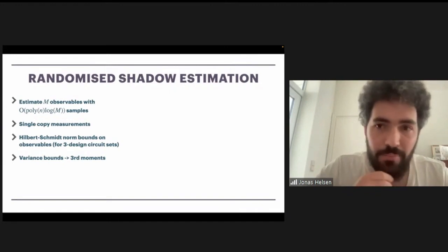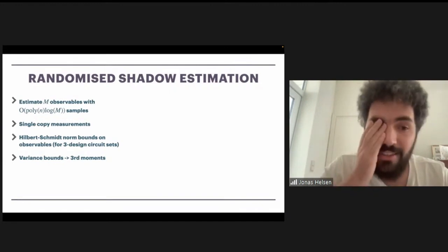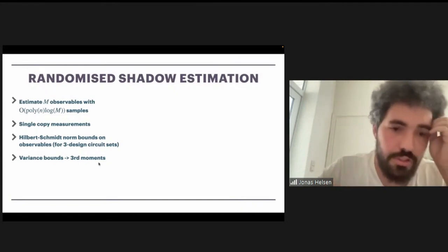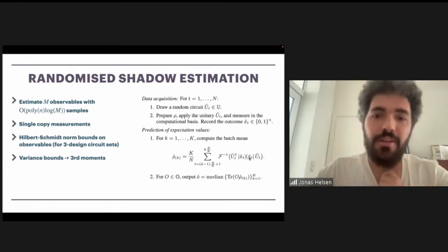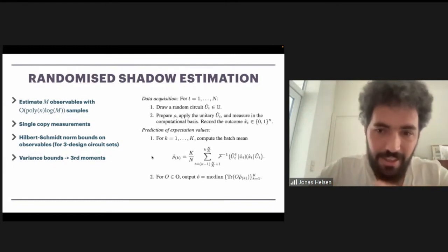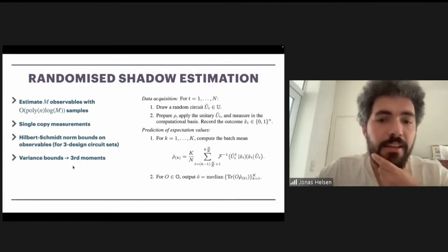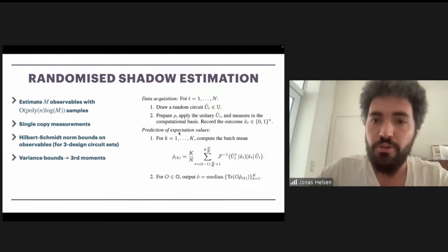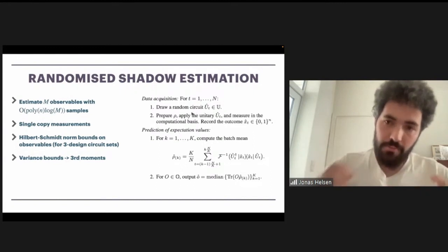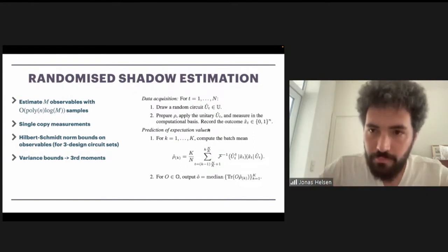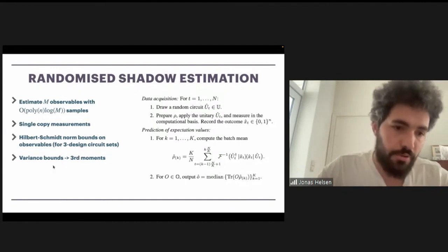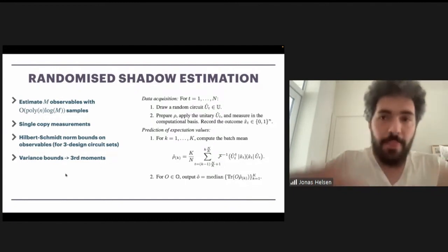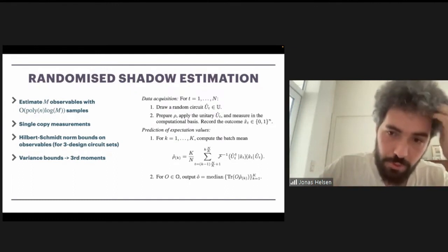To review shadow estimation: this is a delightful protocol where you can estimate an exponential number of observables with respect to the number of samples, using single copy measurements. In this talk, I want to focus on the global Clifford case, or more generally where the circuit set is a three-design. In that case, the relevant restriction on your observables is that they should be bounded in the Hilbert-Schmidt norm.